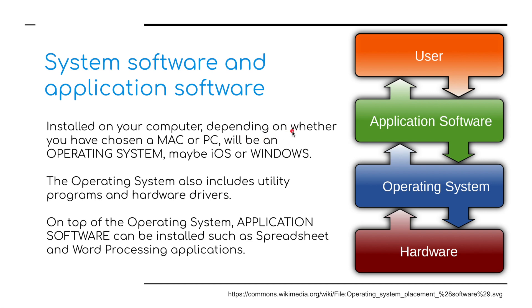Installing your computer, depending on whether you have chosen a Mac or a PC, will be an operating system — maybe iOS or Windows. The operating system also includes utility programs and hardware drivers. On top of the operating system, application software can be installed, such as spreadsheets and word processing applications, and these would all be used by the person operating the computer.